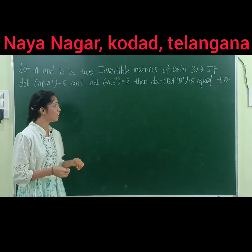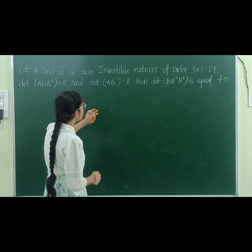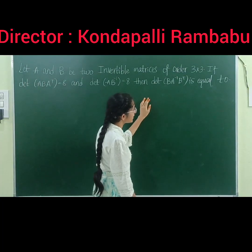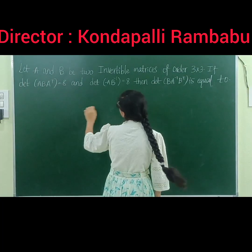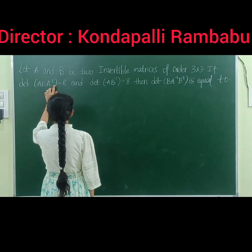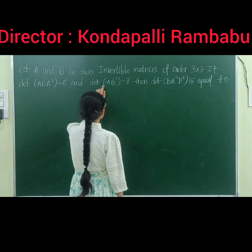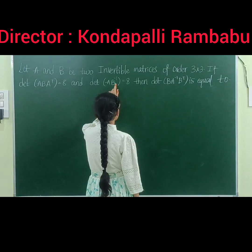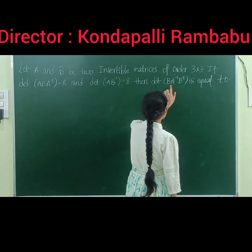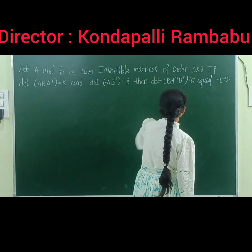Let A and B be two invertible matrices of order 3×3. Let |A·B·Aᵀ| = 8, and let |A·A| = |A|². Then let |B·A⁻¹·Bᵀ| is equal to?